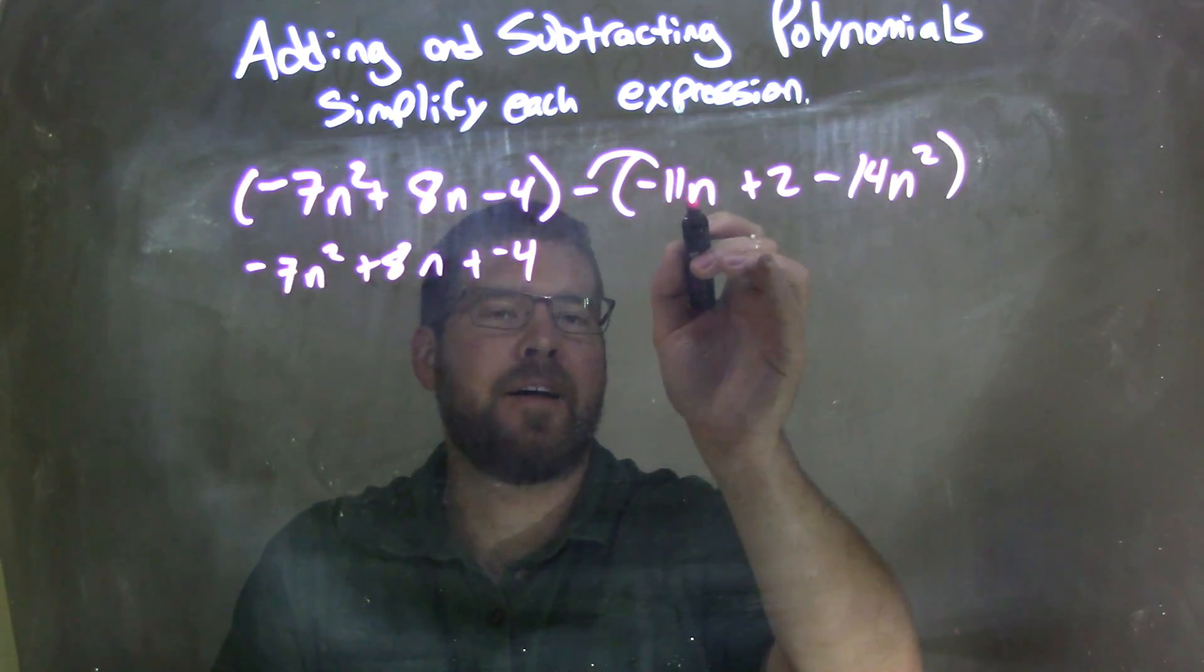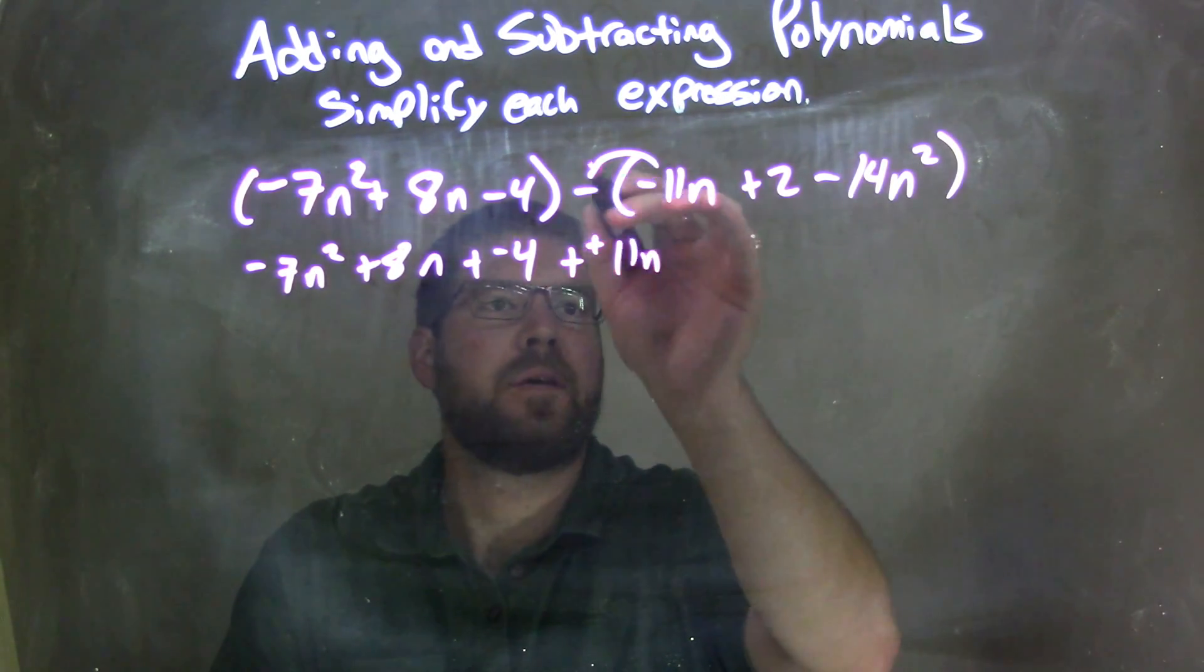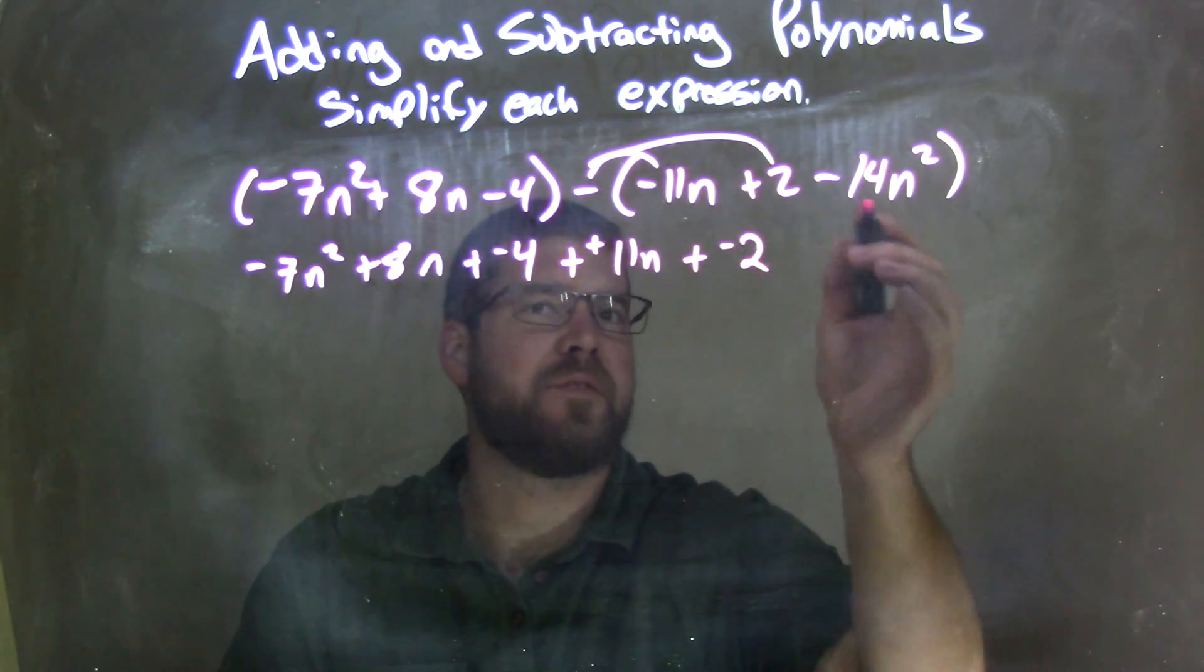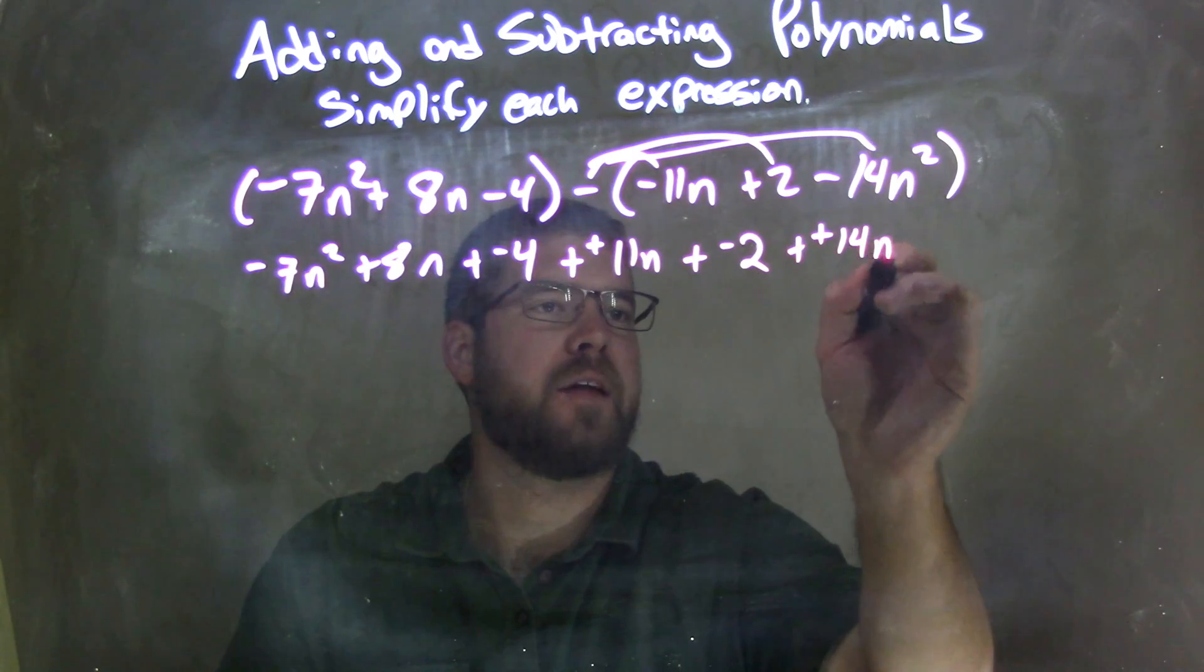So negative times negative 11n gives us positive 11n, plus a negative 2. Distribute again, negative times negative 14n squared gives us positive 14n squared.